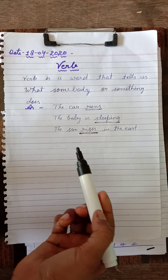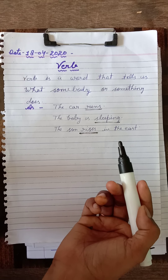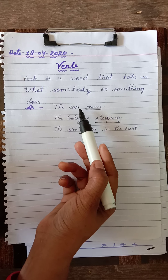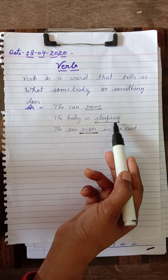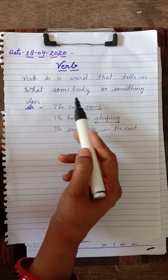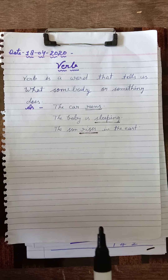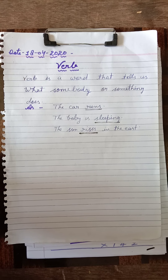So students, I hope you understood the meaning of verb well. Not only we, but things also do something — as the car is a thing and the car runs, the baby is a person and the baby is sleeping. So 'somebody or something' means a person or a thing like a car or a fan. Today, you will try to find out action words from your daily routine — as you will play, you will study, you will watch TV. There are so many action words and whenever you find these words, you will write them in your notebook. Thank you and have a nice day.